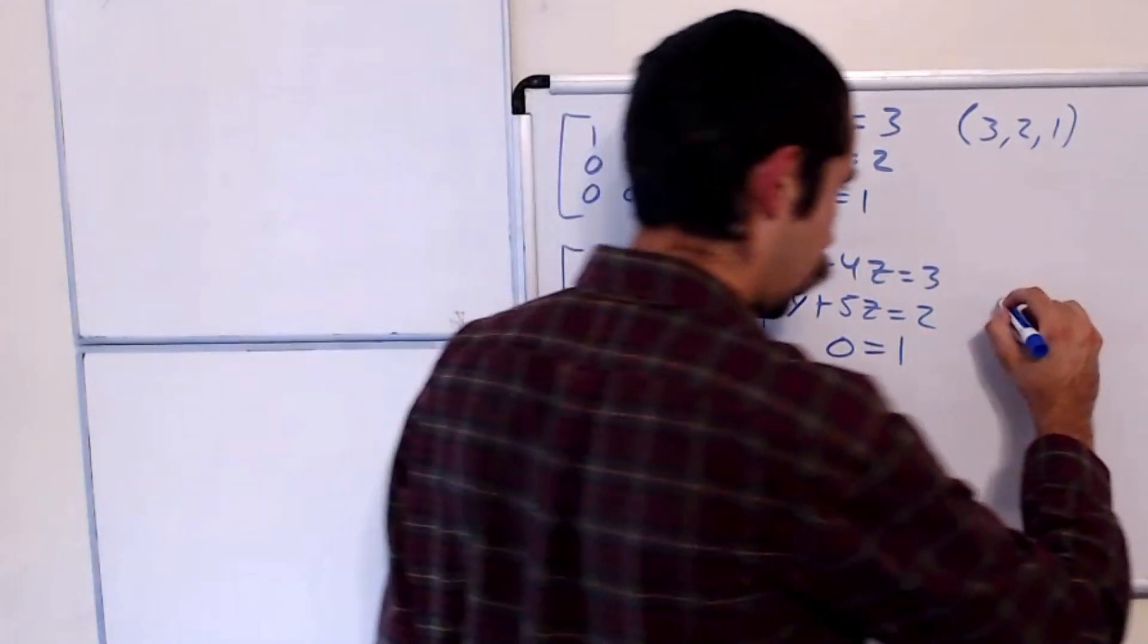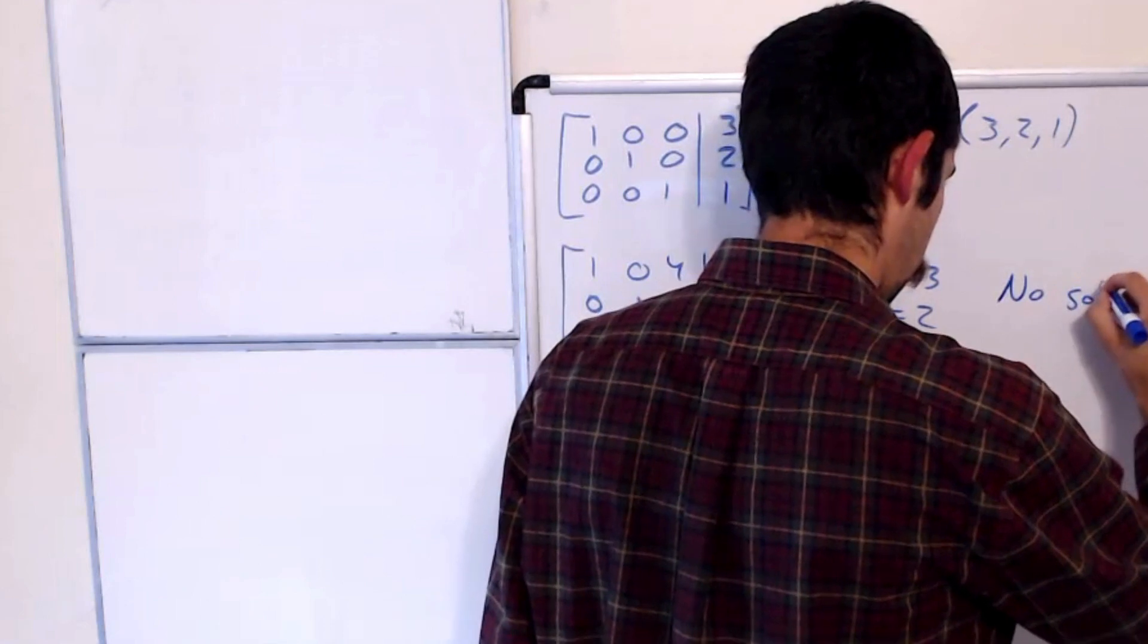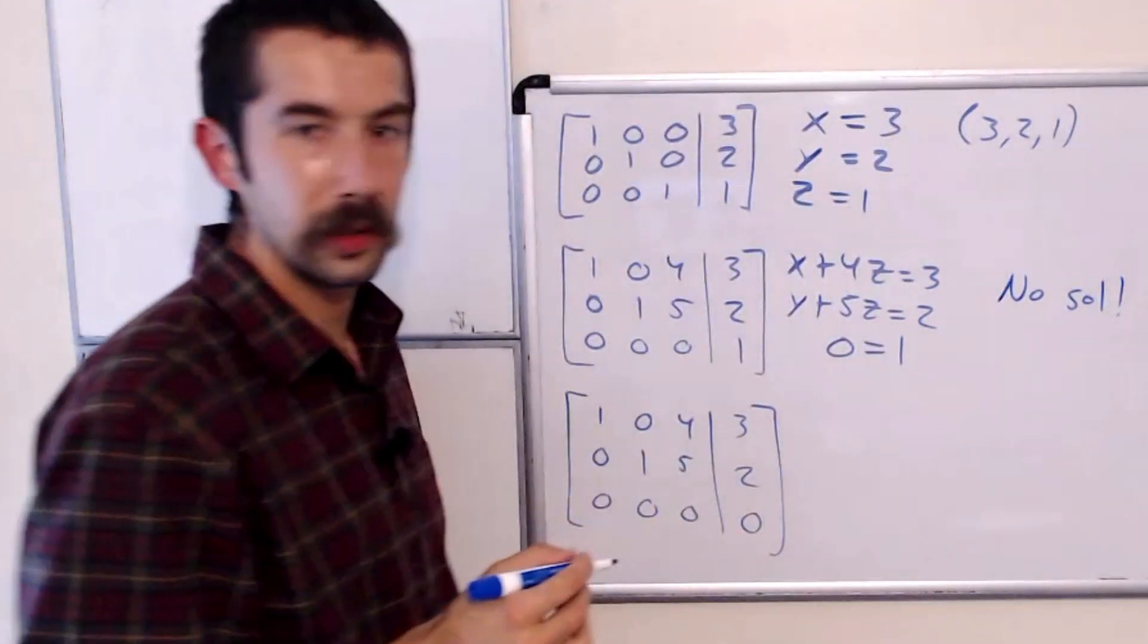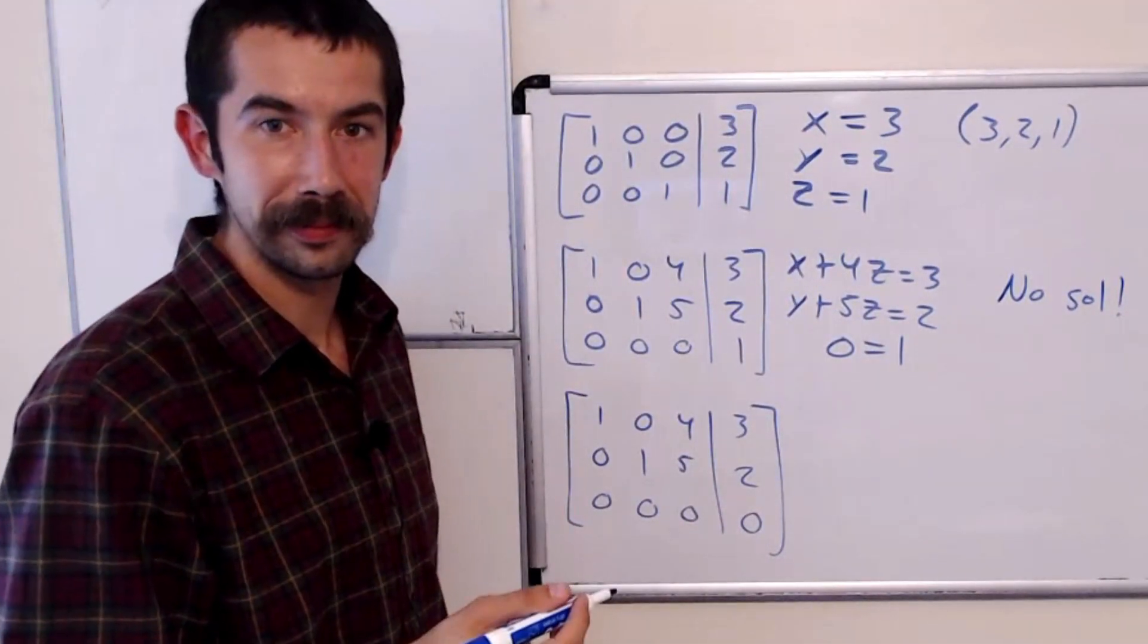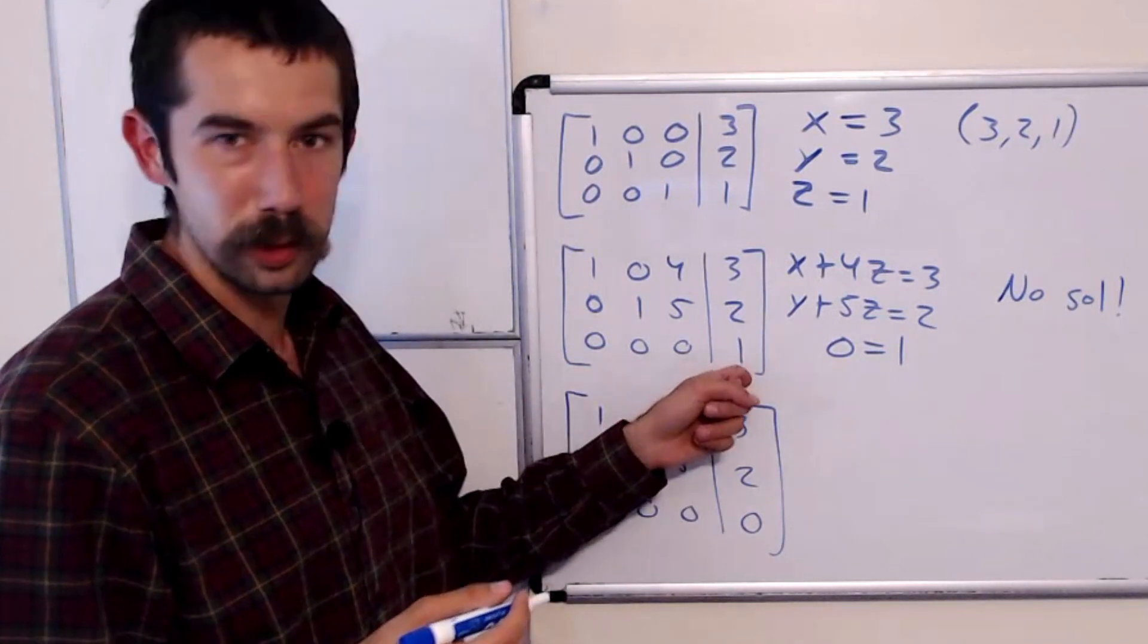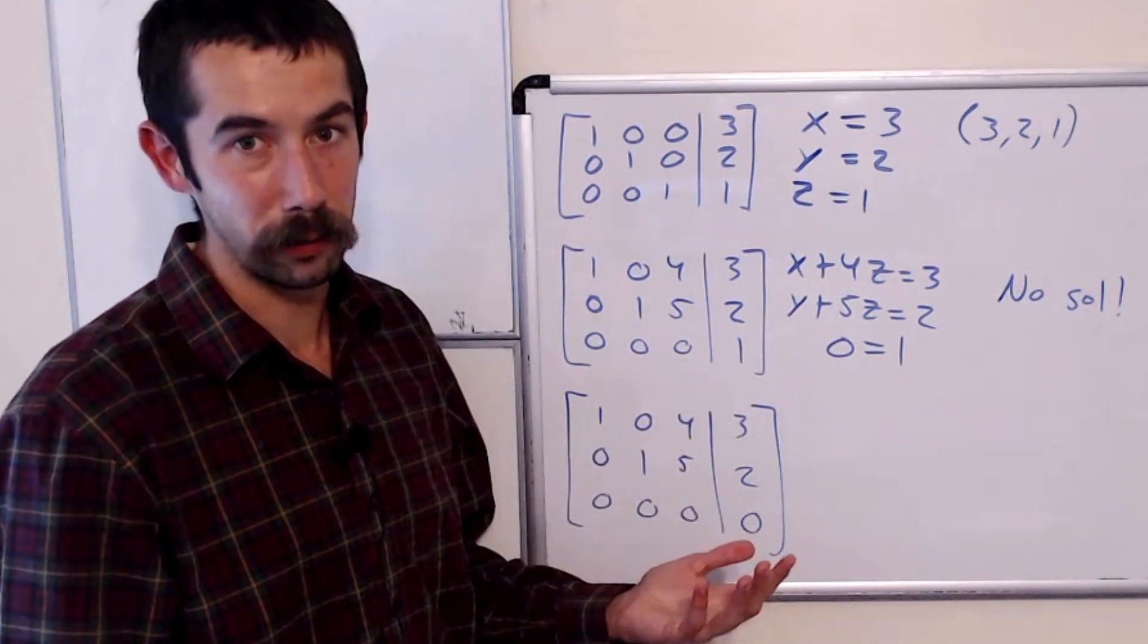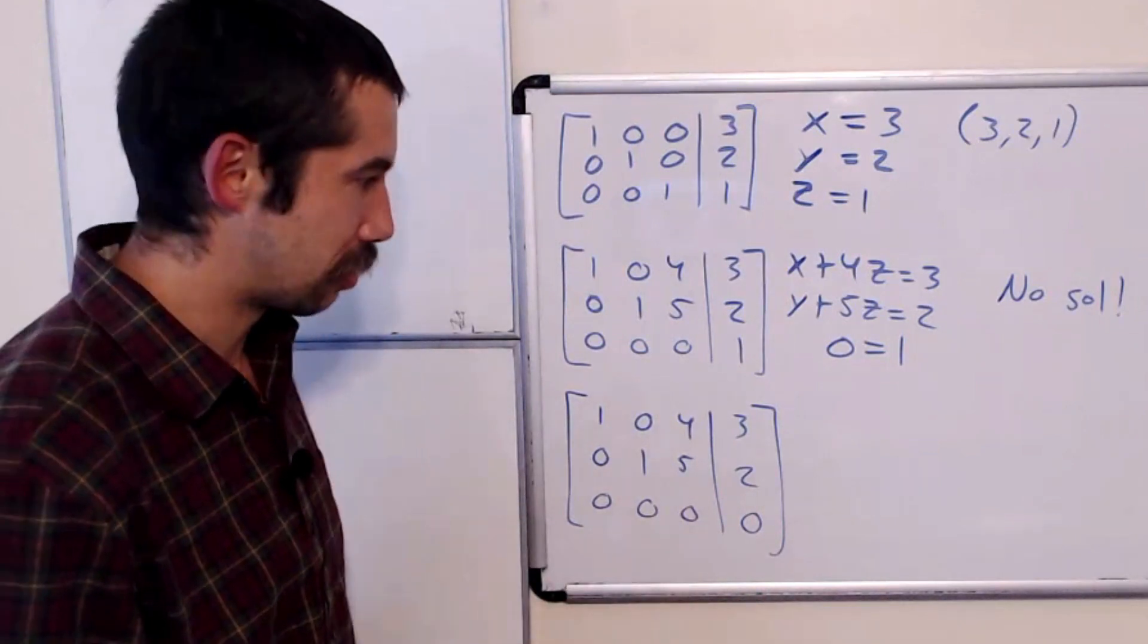So there's no solution to this system. Right? Because this last line says 0 equals 1. But unless you're a fool, you know that 0 does not equal 1.